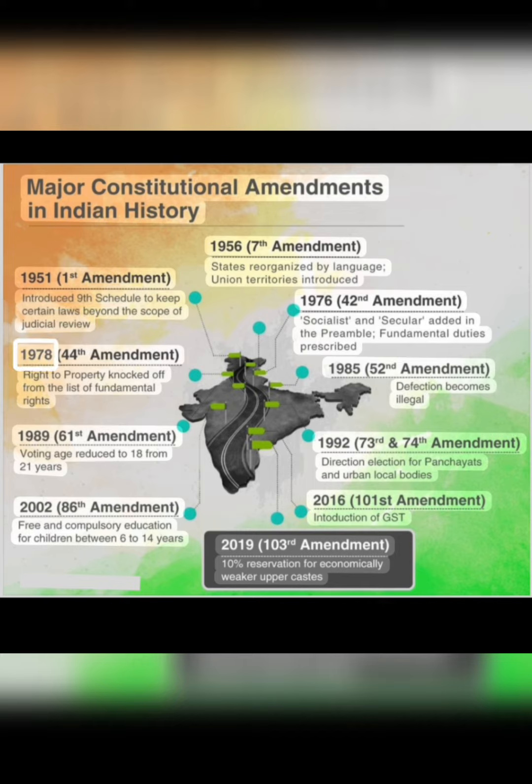1978, 44th Amendment: the Right to Property was knocked off from the list of Fundamental Rights.